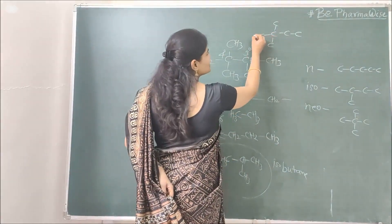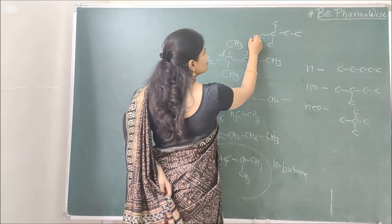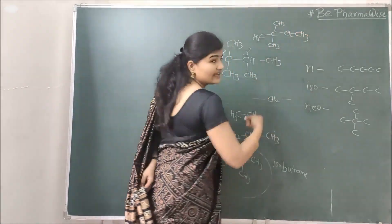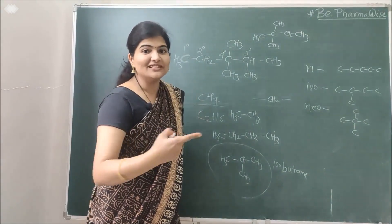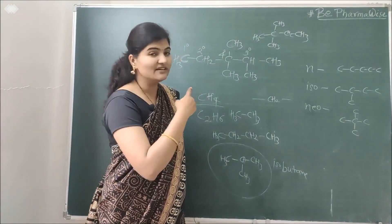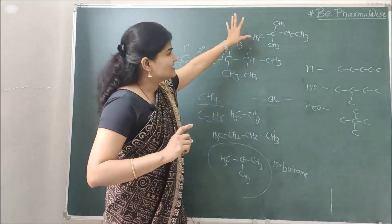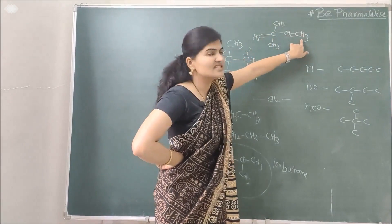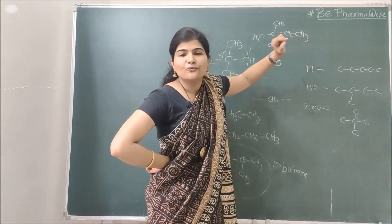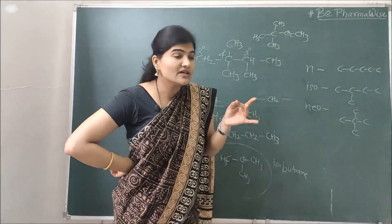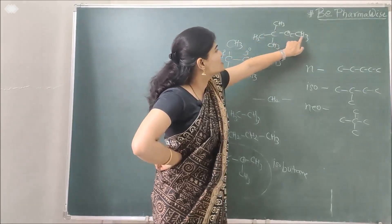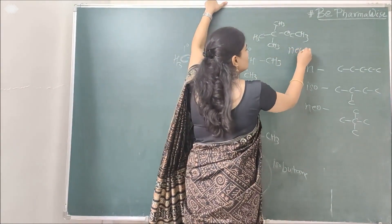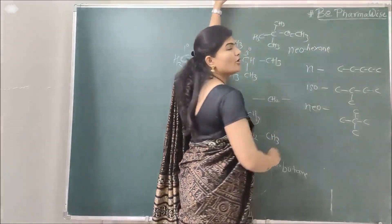One more example: counting 6 carbons gives us hexane as the parent. Now which hexane — N-hexane, iso-hexane, or neo-hexane? It is neo-hexane, because in the straight chain the second-to-last carbon has two methyl groups. So it becomes neo-hexane as the common name for this kind of compound.